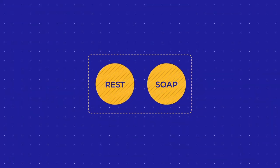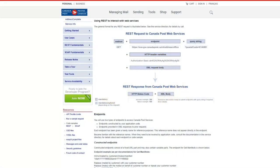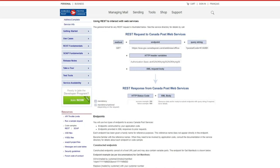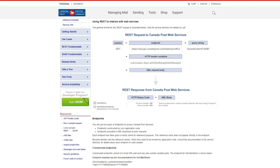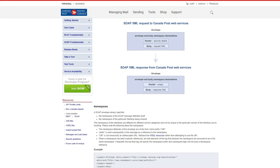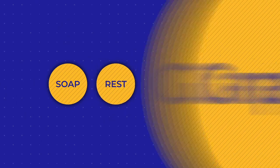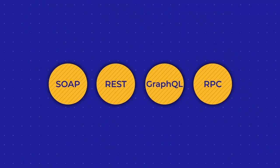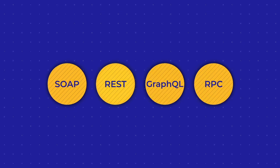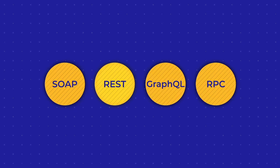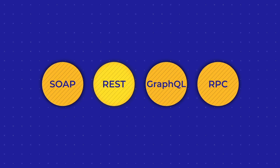Sometimes API providers offer two API types in parallel — for example, integrating Canada Post services, online stores can choose between REST and SOAP architecture. So don't give in to labeling API designs; always keep in mind the needs of your software because they will determine your choice. But these four methodologies don't present the full picture of communication between systems.